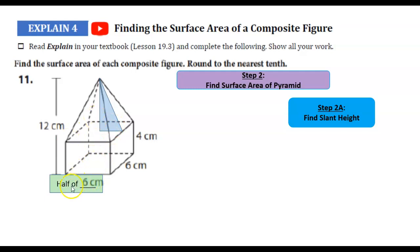So here that would be half of 6, which is 3. Now, the whole thing from top to bottom is 12. I know this is 4. So what's the difference between 12 and 4? About 8.